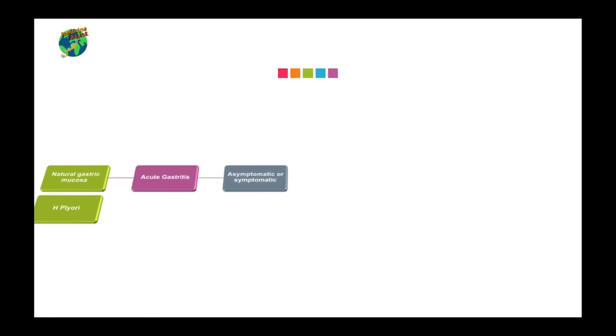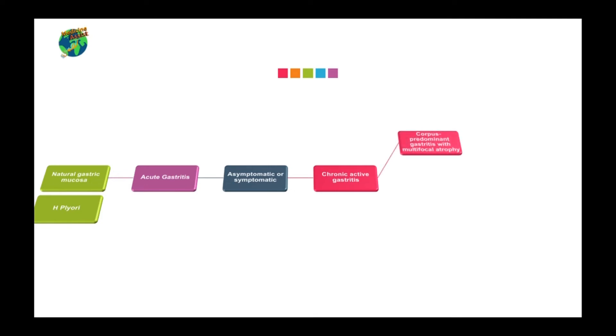We present a flowchart showing how a normal gastric mucosa is converted into a pathological state as a result of Helicobacter pylori infection. First, acute gastritis occurs, which may be asymptomatic or symptomatic. Later it can become chronic active gastritis, which divides into either antral predominant gastritis or corpus predominant gastritis with multifocal atrophy.